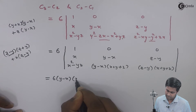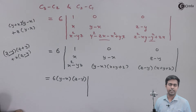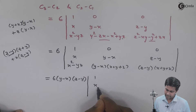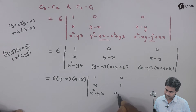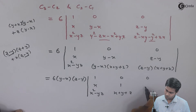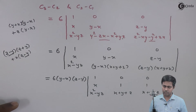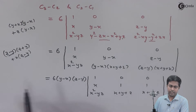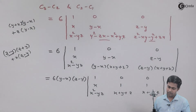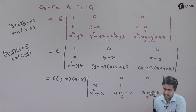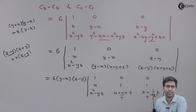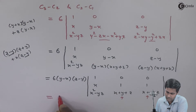We take (y−x) common from the second column and (z−y) common from the third column, giving 6(y−x)(z−y) outside. Inside the determinant we get: row 1: 1, x, (x²−yz); row 2: 0, 1, (x+y+z); row 3: 0, 1, (x+y+z). Now columns c2 and c3 are identical, so by the properties of determinants the determinant equals zero.